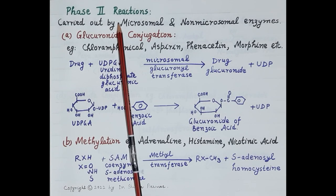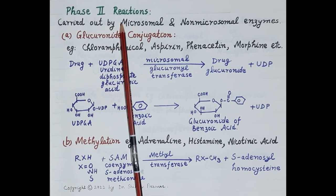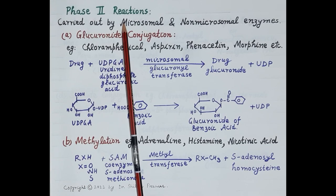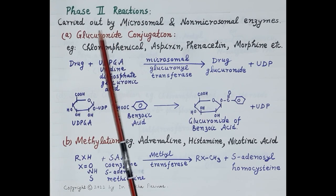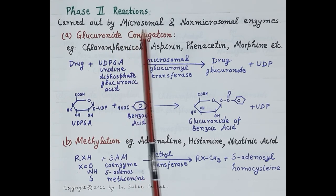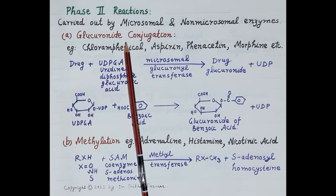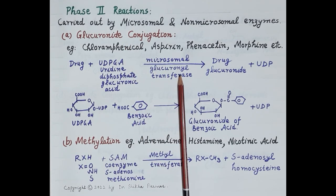Phase 2 or conjugation reactions are of several types, for example: glucuronoid conjugation, acetylation, methylation, sulfonation, etc. Phase 2 reactions are carried out by microsomal and non-microsomal enzymes. The first type of phase 2 reaction is glucuronoid conjugation. It is the most important phase 2 metabolic reaction and it is mediated by microsomal glucuronoid transferase.